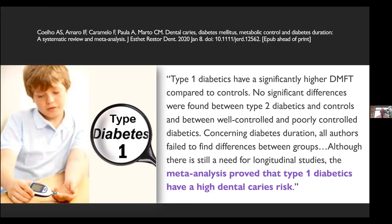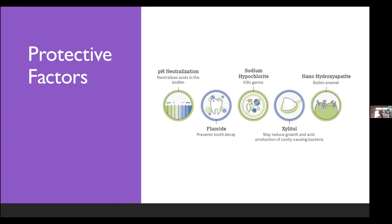A study on type 1 diabetes found that those patients had a significantly higher DMFT score compared to controls. A meta-analysis proved that type 1 diabetes increases caries risk, and we also know that type 1 diabetes may increase risk for periodontal disease as well.